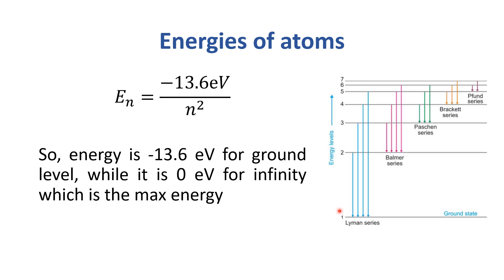Here you can see, this is the first shell, which is ground state. Second, third, fourth, and up to seventh, and so on. So, different series are: if one goes up, the Lyman series; two goes up, so Balmer series; Paschen, Brackett, and so on.